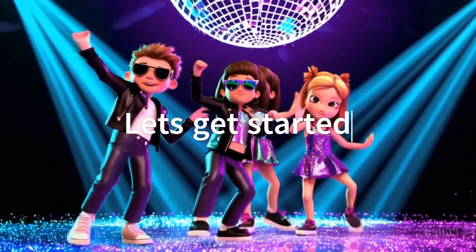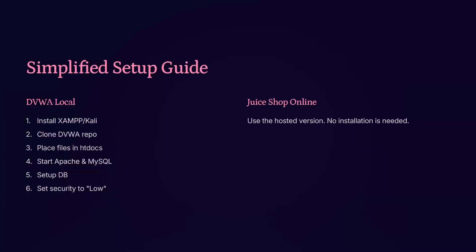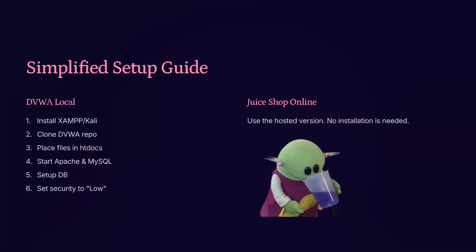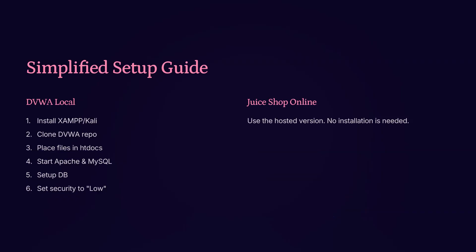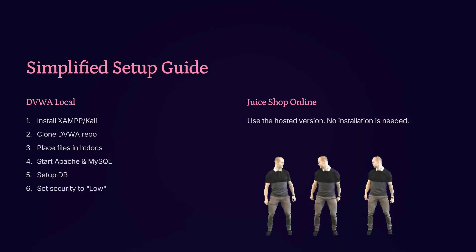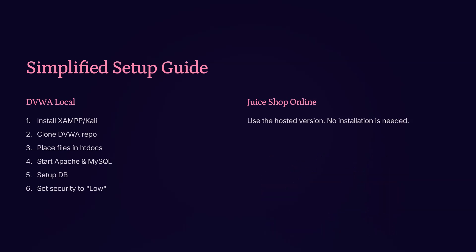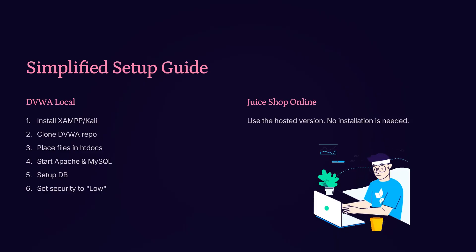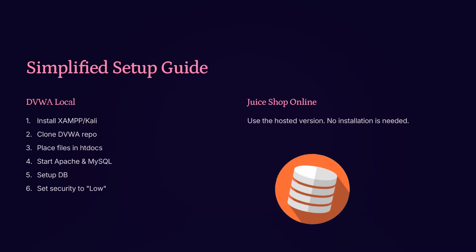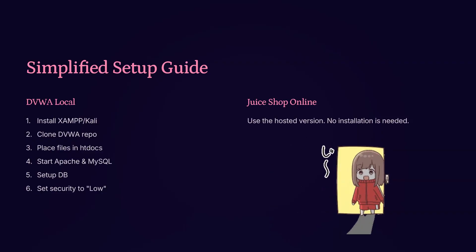Let's walk through how to set up your environment for this assignment. There are two options: DVWA, which you can run locally, and Juice Shop, which is available online without any installation. If you choose DVWA, start by installing either XAMPP or Kali Linux. Once your environment is ready, clone the DVWA repository from GitHub. Next, place the downloaded files into the htdocs directory. After that, start Apache and MySQL services to bring the local server online. Go ahead and set up the database through the DVWA interface, and finally make sure to set the security level to low.